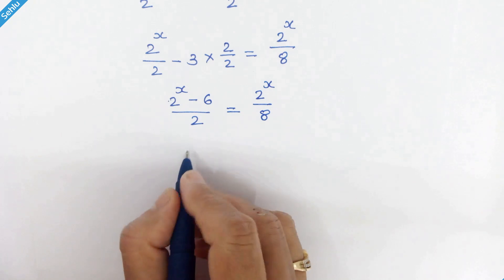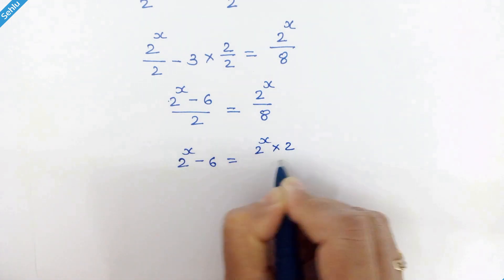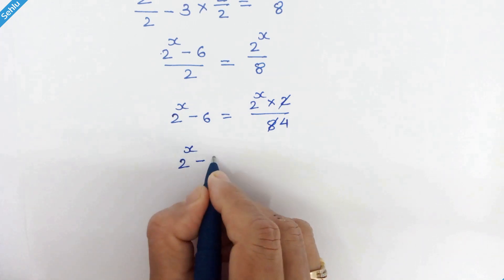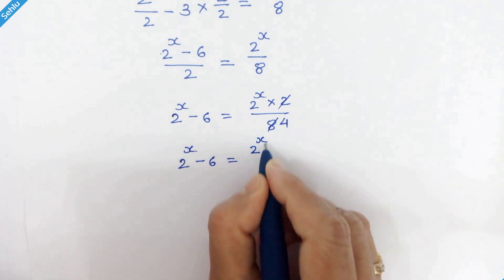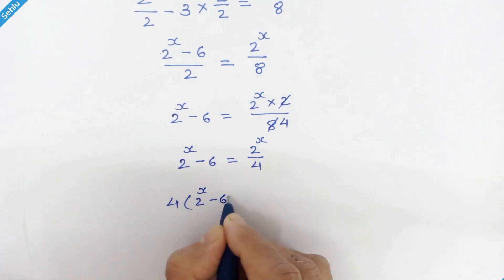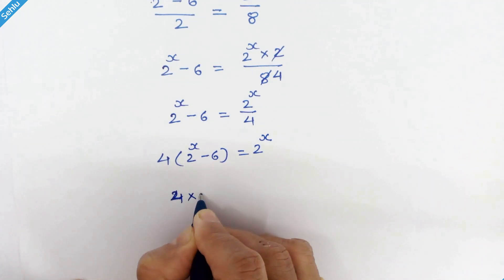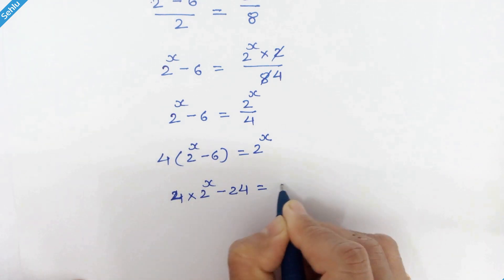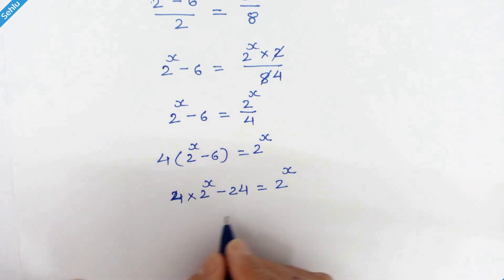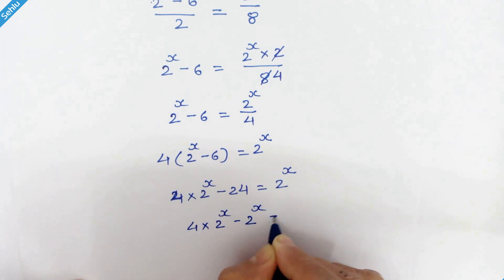Now let's move this to the right hand side. So we have 2 raised to x minus 6 equal to 2 raised to x upon 4. We will move this 4 to the left hand side. Let's open this bracket. So we have 4 times 2 raised to x minus 24 is equal to 2 raised to x. Now let's move 2 raised to x to the left hand side and 24 to the right hand side, giving us 4 times 2 raised to x minus 2 raised to x is equal to 24.